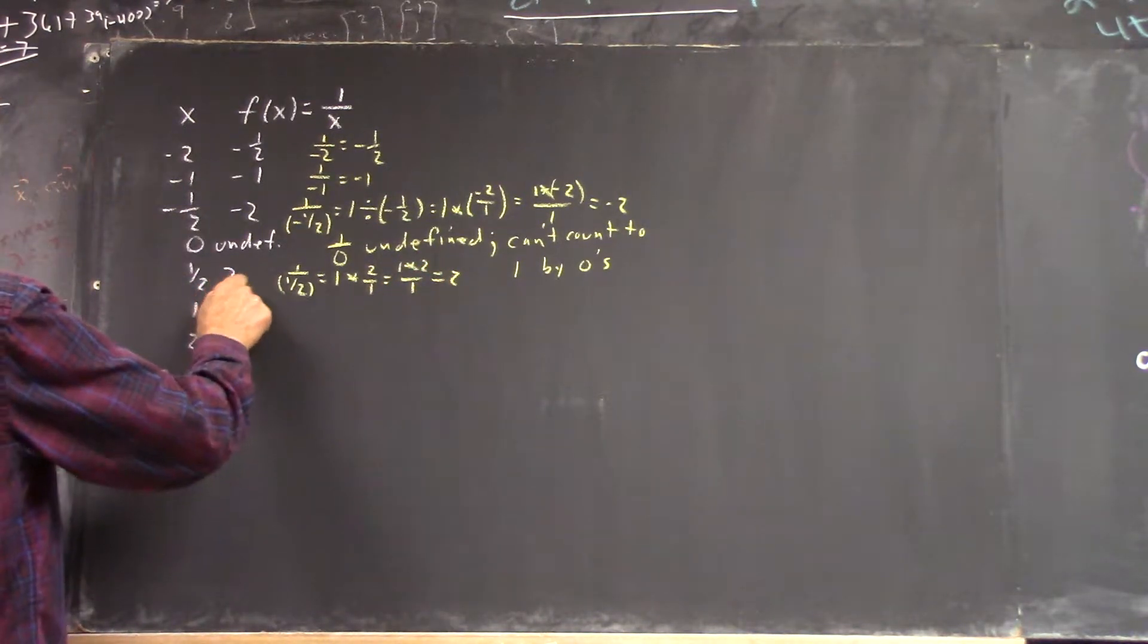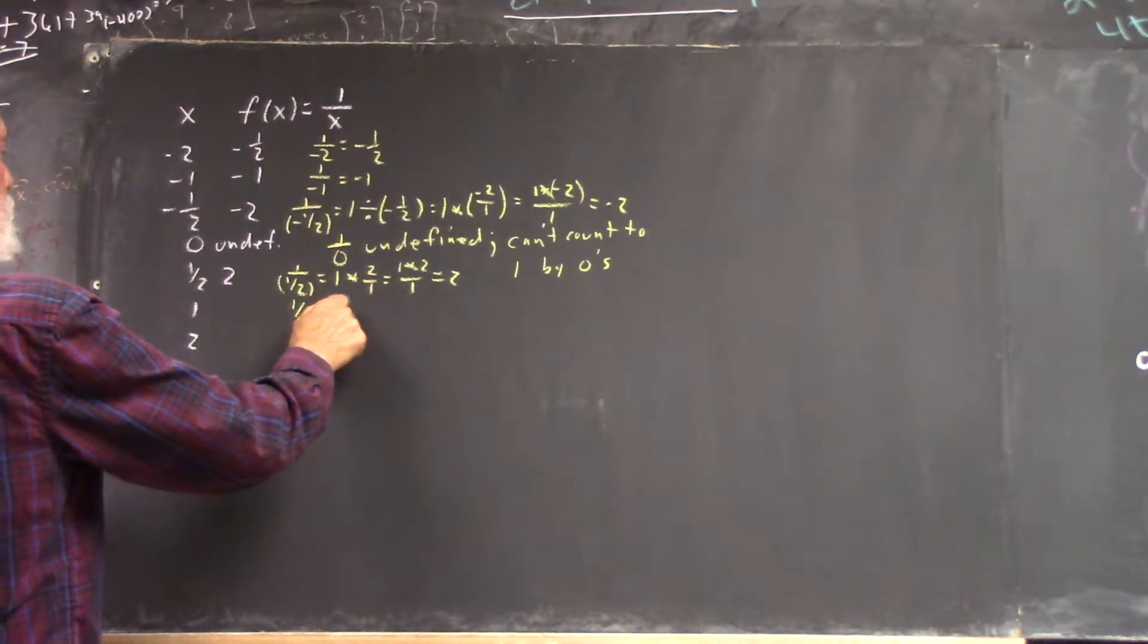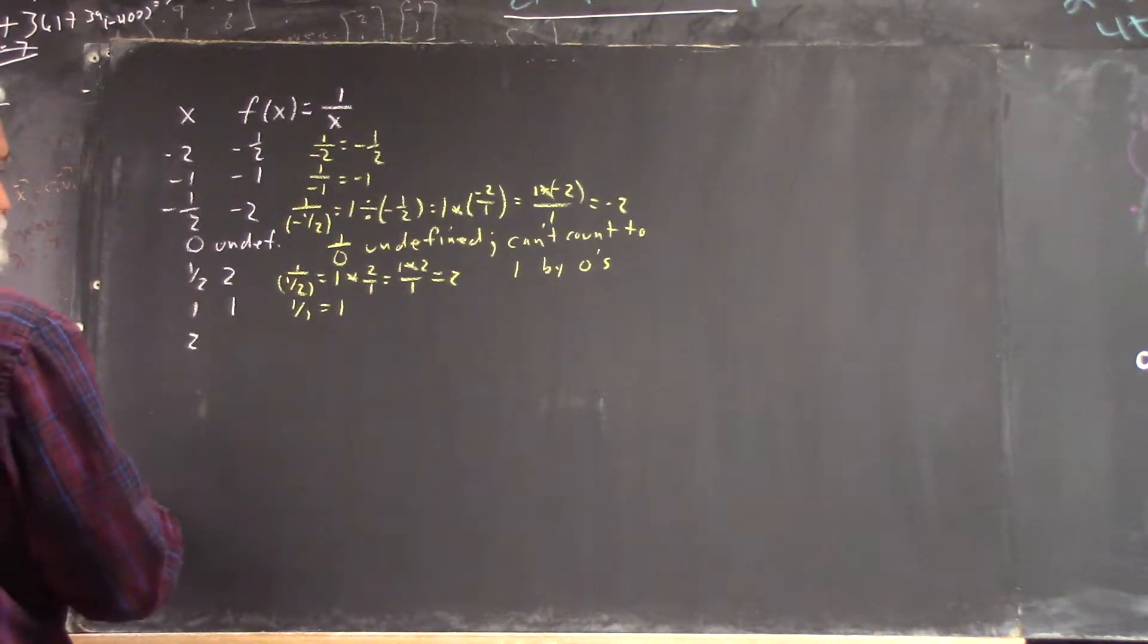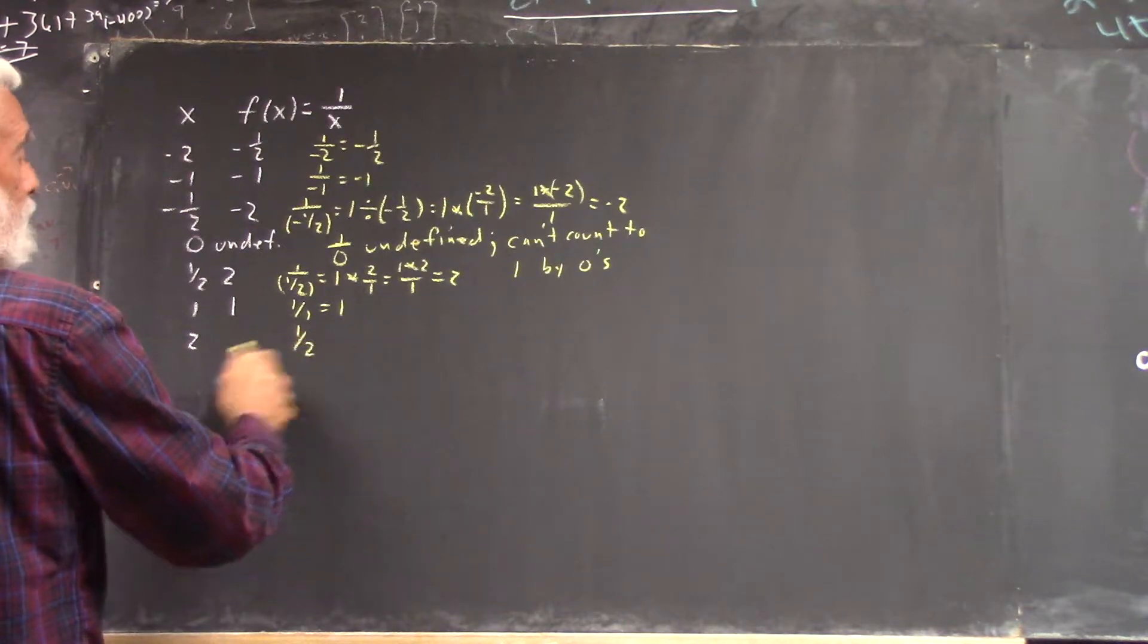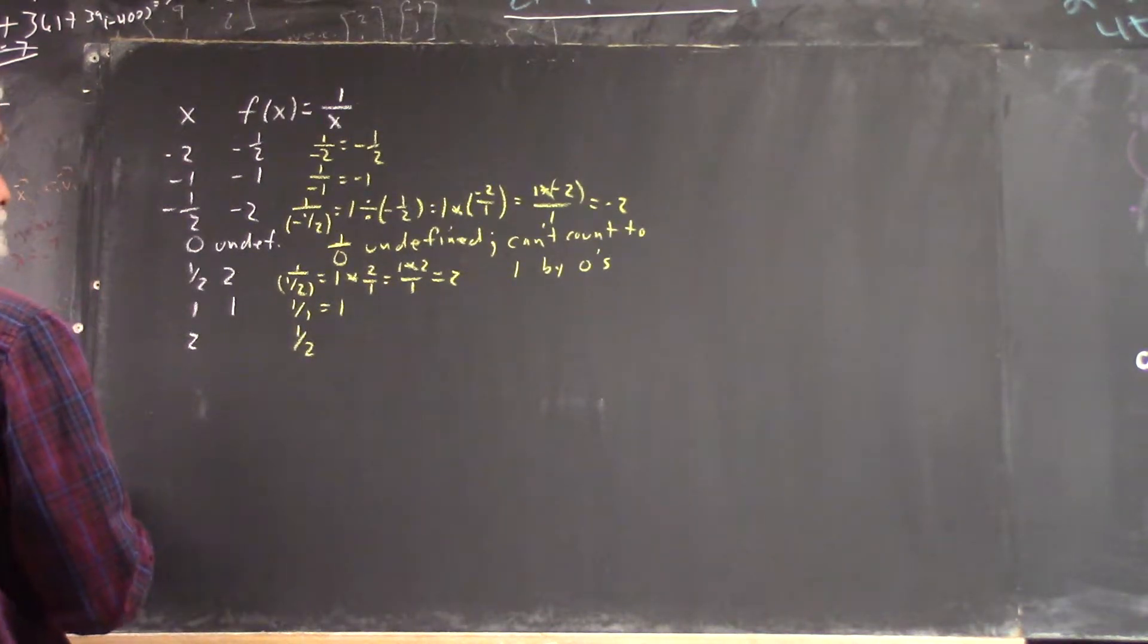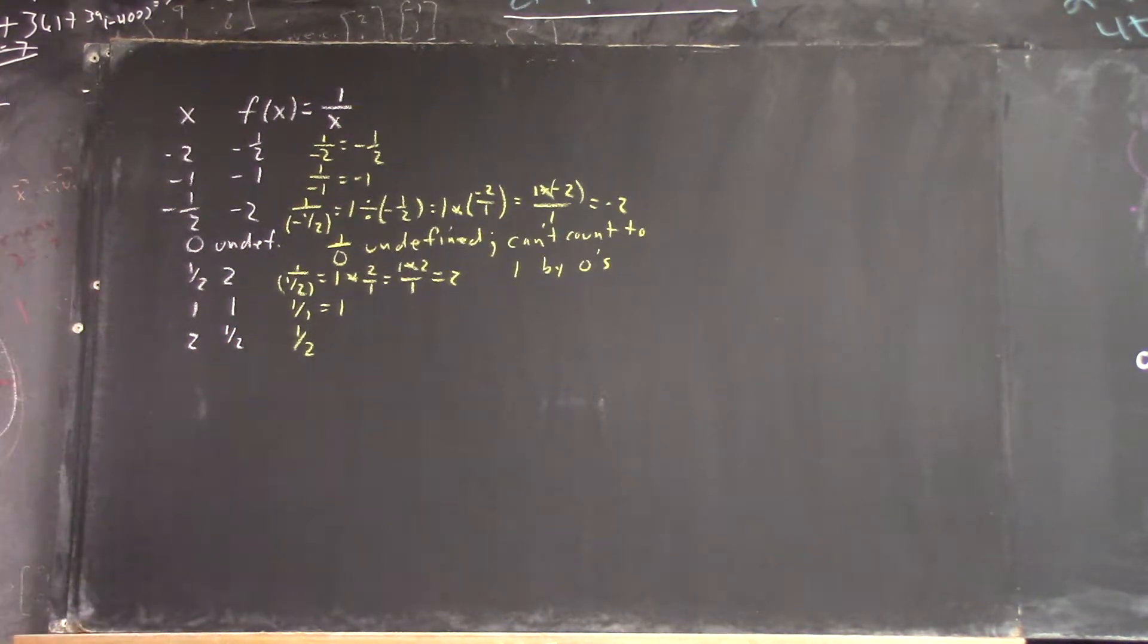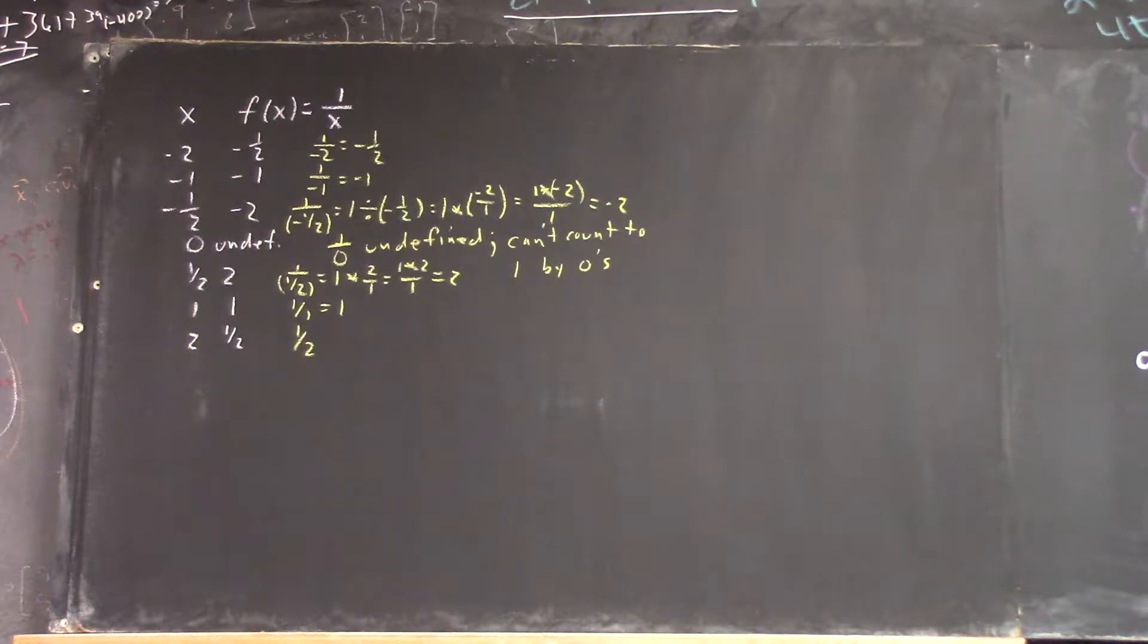So there it is. For 1, you get 1 over 1, which equals 1. It might seem tedious to write all these out, but again, you have to reinforce. That's just 1 over 2. And that's 1 half. So there's the table. And now let's do 2 to the x.